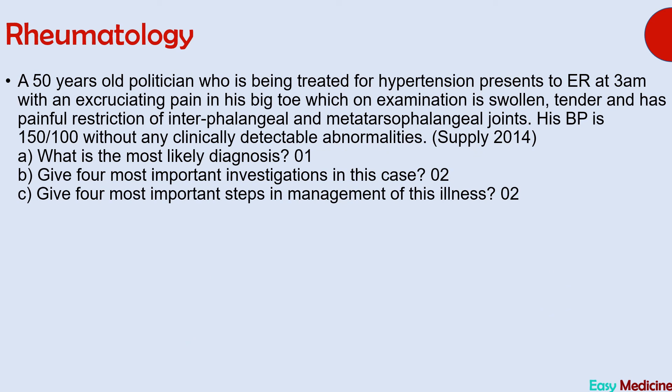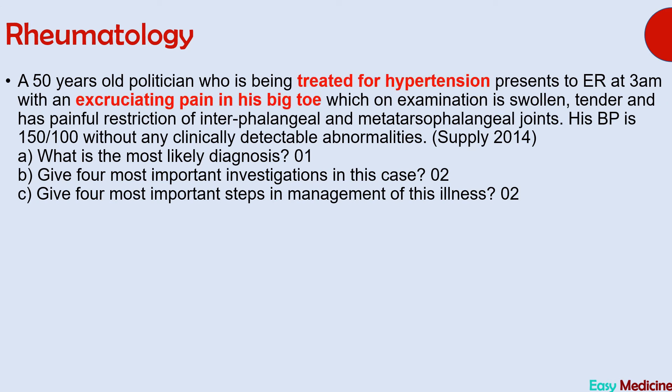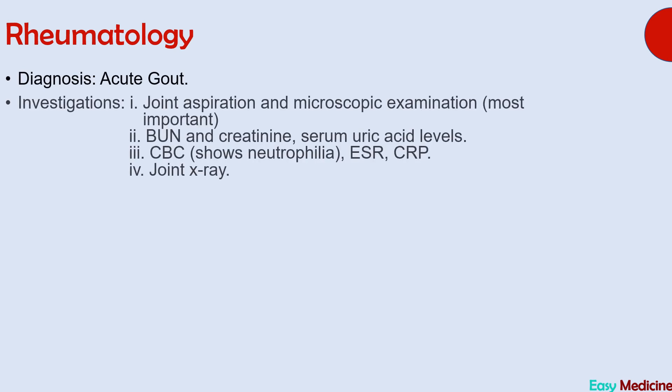The next question's diagnosis is acute gout. Important diagnostic points are: history of hypertension — patients with hypertension are often given thiazide diuretics, which are a risk factor for acute gout — and acute onset of excruciating pain in the big toe, which is the typical first presentation of gout.